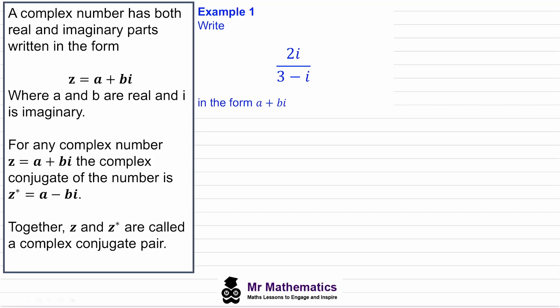In this video I'm going to show you how we work with complex conjugates. A complex number has both real and imaginary parts and is written in the form z equals a plus bi, where a and b are real and i is imaginary.